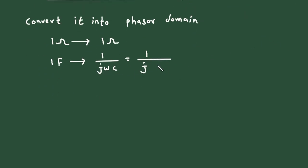So here also the omega will remain same, 1, and capacitance value is 1. So it will be 1 upon... this 1 times 1 will be 1. So minus j, minus j1 ohm.